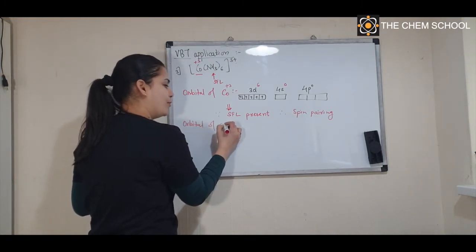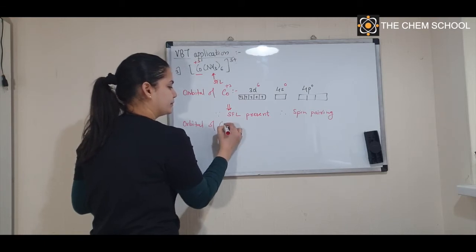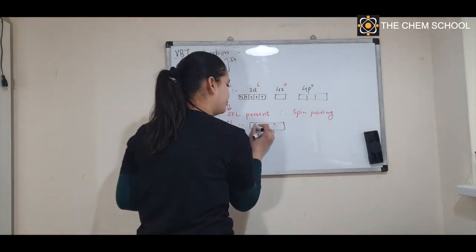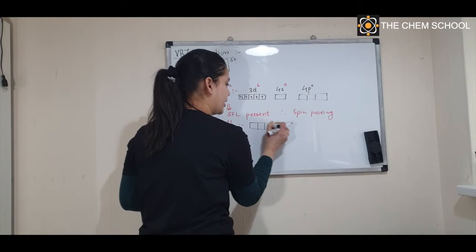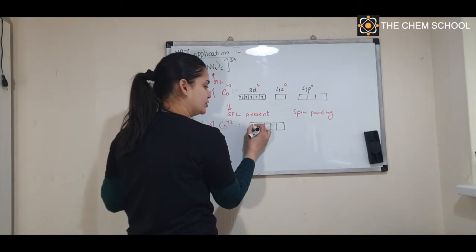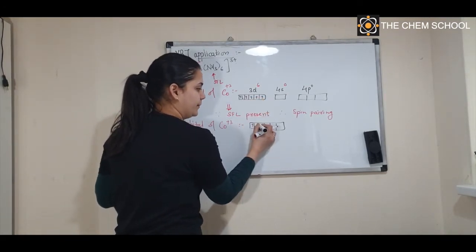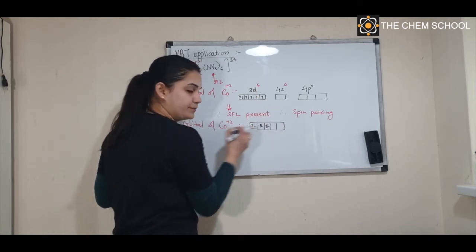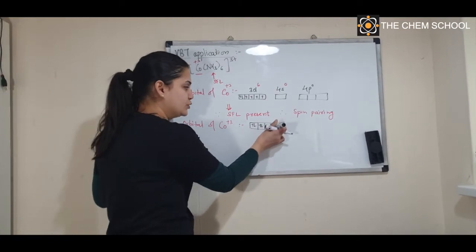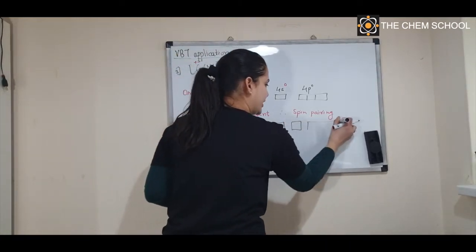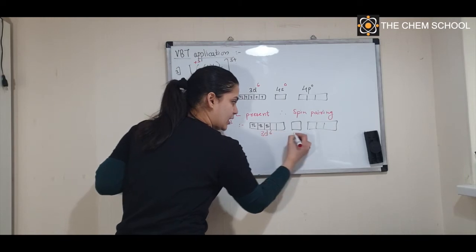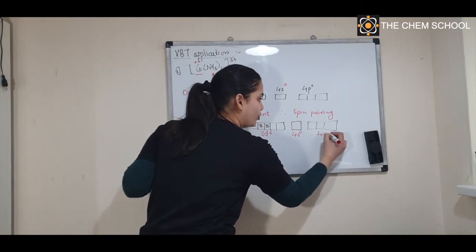After spin pairing, the orbitals of Co³⁺ will look like this: push the electrons together, so all four unpaired electrons pair up. You now have a total of six electron pairs — these two 3d orbitals are now empty. Your 4s orbital was already empty and 4p was already empty. So you have: 3d⁶ (fully paired), 4s⁰, 4p⁰.